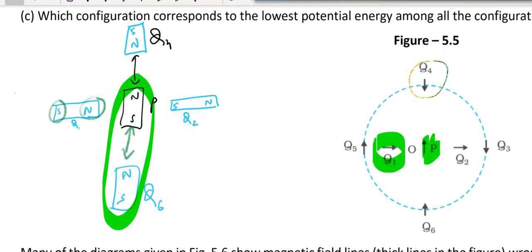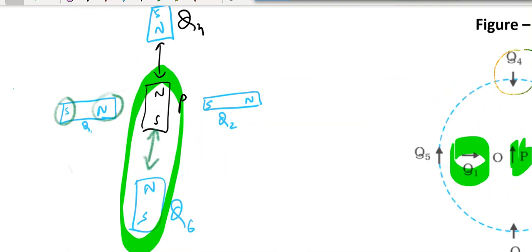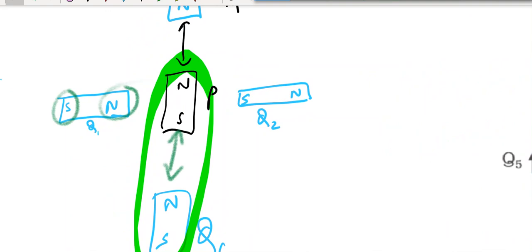pq4 is unstable equilibrium. pq6 is stable equilibrium. In pq4 potential energy is maximum. For pq6 potential energy is minimum. What about pq1 and pq2? Not equilibrium condition.